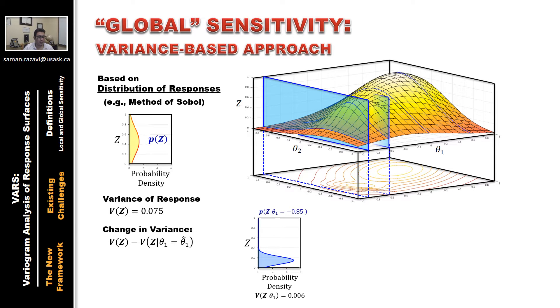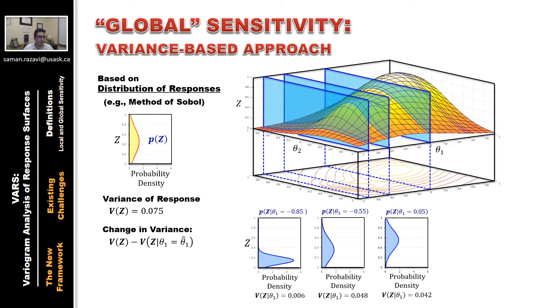We can do the same thing for different theta values. If we knew theta was located somewhere else in the parameter space, we could do the same, take the cross-sections. Obviously then the change in variance could be different. And even in some cases, for example, for the last one on the right, by adding this new information, by knowing the exact value of theta1, we would increase the total variance in the model response. In other words, we would increase the uncertainty. So that's the paradox, really.